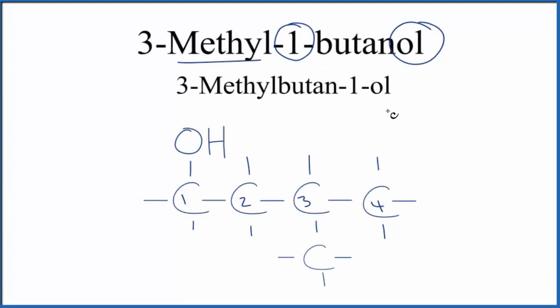If you wanted to write the molecular formula, you could count up the carbons, hydrogens, and oxygens. You get C5H12O. This is Dr. B with the structural formula and the molecular formula for 3-methyl-1-butanol. Thanks for watching.